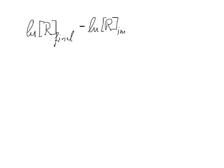Minus the ln of the concentration of the reactant at the beginning when we start our observation — I write this as ln R_initial — equals minus k times the time when we stop our observation, T_final, minus T when we start our observation, T_initial.